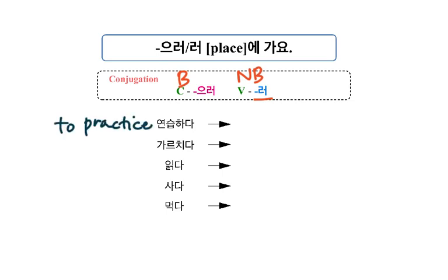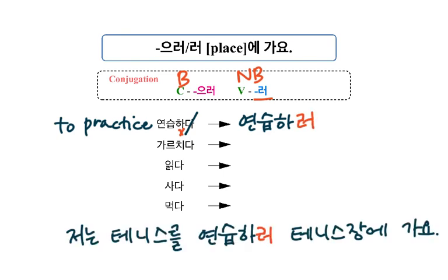연습하다 means 'to practice.' Take out 다, and there is no 받침, so add 러. 연습하러. 저는 테니스를 연습하러 테니스장에 가요. I go to the tennis court in order to practice tennis.